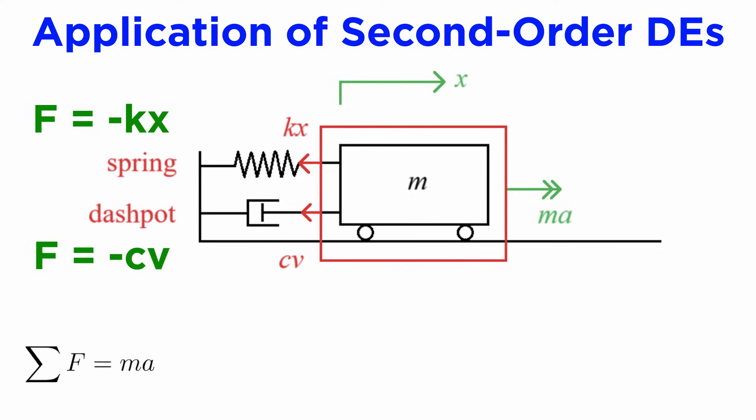Newton's second law states that the sum of the forces acting on the trolley must equal m times a. We know that acceleration a is the rate of change of velocity, which in turn is the rate of change of displacement, so we can write a as the second derivative of x, and we can put in our spring and dashpot forces as shown. If we move everything to one side, we end up with the equation m times the second derivative of x plus c times the first derivative of x plus k times x equals zero.